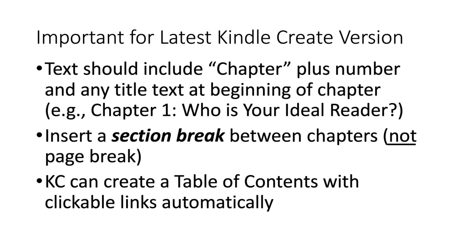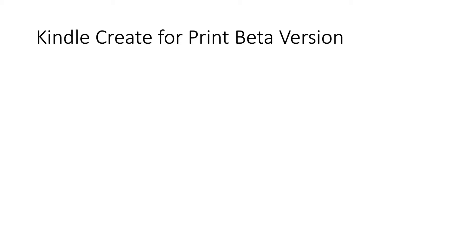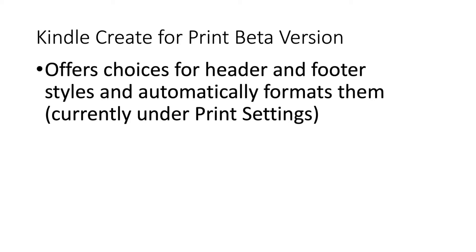Now the Kindle Create print side of the program — you're creating one file that will be for both the print and ebook version. It offers choices for header and footer styles and then automatically formats all your pages through the entire book according to that style. It's currently under an icon that says Print Settings. We used to have no choice in terms of the header and footer — it just did one. Now I think there are about eight. You can choose from having it mirrored on the right and left for page numbers or headers, or have the page number and header all on top. Choose one that looks best for your book and it does it automatically.